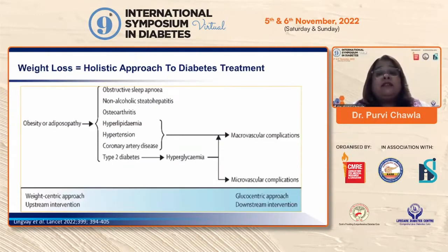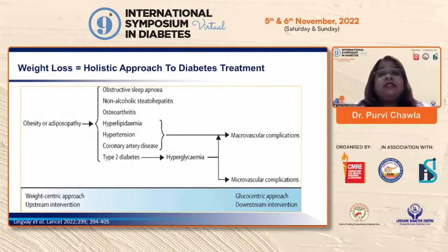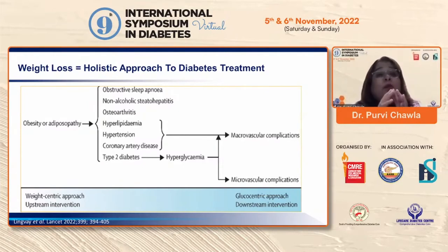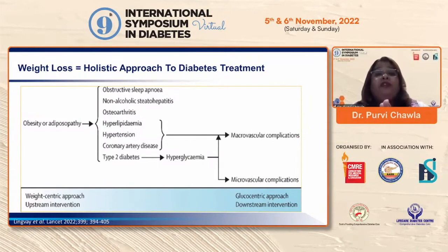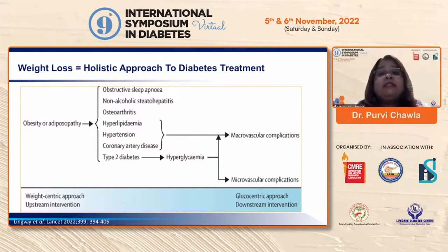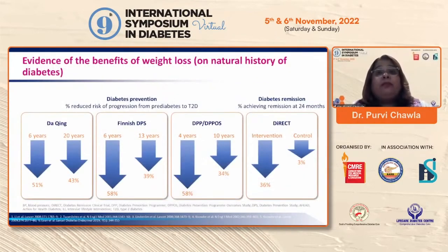Weight loss gives us a holistic approach to diabetes treatment. With a glucocentric approach, you're tackling microvascular and macrovascular complications. But if you start upstream — at the weight itself — then you're tackling so many other aspects of obesity and its comorbidities like hypertension, hyperlipidemia, cardiovascular manifestations, as well as type 2 diabetes and hyperglycemia.